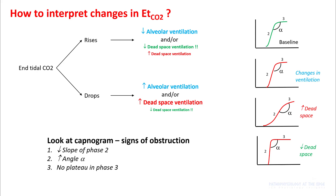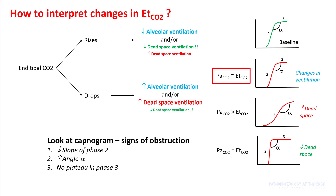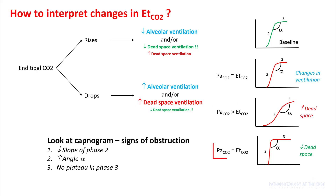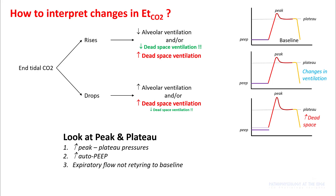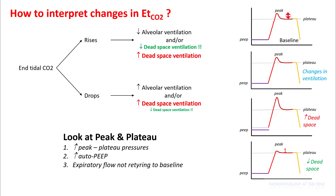Improvement in dead space ventilation can also change your end-tidal CO2. In these cases, you will see the capnogram improving: phase 2 becomes more vertical, angle alpha drops, and you will see a more horizontal phase 3. If the capnogram remains unchanged, your PaCO2 will be similar to your end-tidal CO2. If you have increasing dead space, PaCO2 will be higher than end-tidal CO2. Whenever end-tidal CO2 changes due to ventilation, your peak minus plateau will not change. If there is increasing obstruction, peak minus plateau pressures will increase. If dead space or obstruction is decreasing, you will see peak minus plateau coming down.